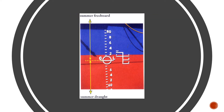Summer freeboard is the vertical distance from the summer load line — which coincides with the horizontal line of the plimsoll mark — up to the deck line. Summer draft is the vertical distance from the upper line of the summer load line, or the upper line of the horizontal plimsoll mark, down to the water level. Make sure you become familiar with these terms, as I have found many students asking questions about them. I'll show you all of these in pictures so that you get a good understanding.